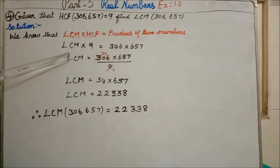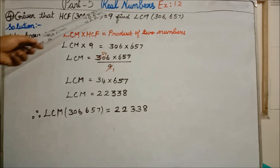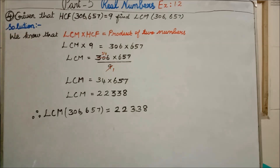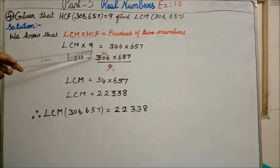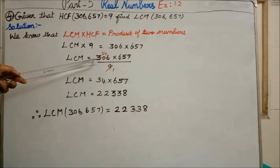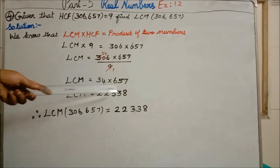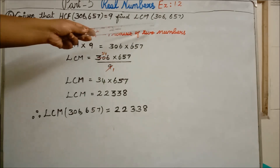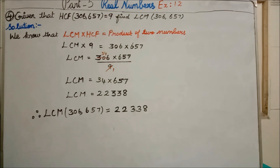We don't know the LCM value, so we write LCM as such. The HCF value is 9, so we write 9 here. This equals the product of the two numbers, so we multiply 306 × 657. Next, 9 will move to divide. In the 9 times table, 306 divided by 9 gives 34. So LCM = 34 × 657. If you multiply, we get 22,338. Therefore, LCM(306, 657) = 22,338.